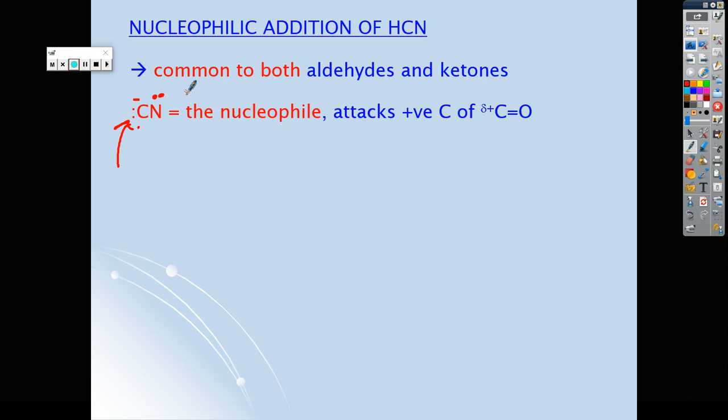Just be careful when you are doing your mechanism that you show the lone pair on the carbon. Very often we have lone pairs on nitrogen, and students get confused thinking the lone pair has to be on the nitrogen. Here it's actually on the carbon, and it is this nucleophile that attacks because we have this polar C=O bond with the electronegative oxygen. It attacks the delta positive carbon, and that's what causes the reaction to initiate.